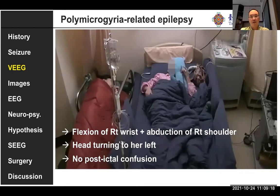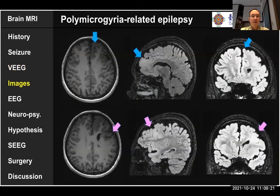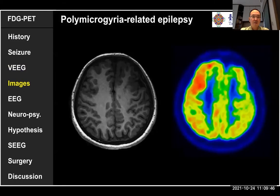When we see her MRI, you can see the left frontal lobe has two polymicrogyria. One is a medium-sized superior frontal gyrus lesion, and one is more lateral in the middle frontal gyrus. You can also see some nodular heterotopia here. So it's a very typical case of polymicrogyria.